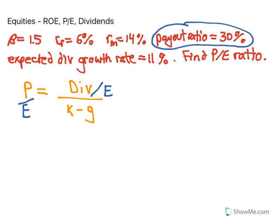A payout ratio of 30% means that if there are excess earnings for the company, 30% will be paid out in dividends and 70% will be retained as earnings. So the P/E formula is just the payout ratio — which is 0.3 — divided by K minus G, the growth rate, which we're given as 11%.